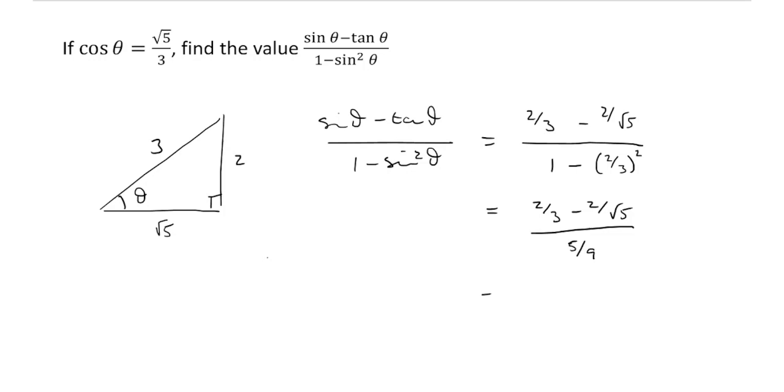So if we were to simplify this, that's the same thing as 9 fifths times by 2 thirds minus 2 root 5. And then if we were to expand this, 9 fifths times by 2 thirds, well, we're going to get 18 over 15.